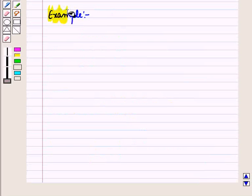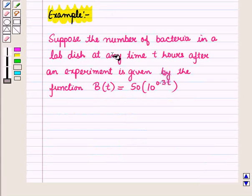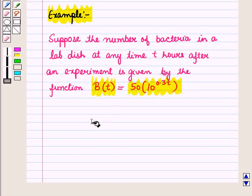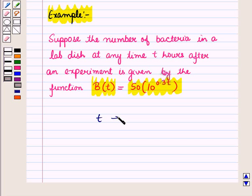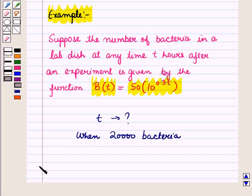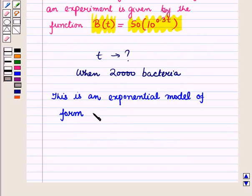Now let us discuss an example. Suppose the number of bacteria in a lab dish at any time T hours after an experiment is given by the function B(T) = 50 × 10 raised to power 0.3T. We want to find the time T when there will be 20,000 bacteria in the lab dish. This is an exponential model of form A·B raised to power C·T equal to D, where B is the base.